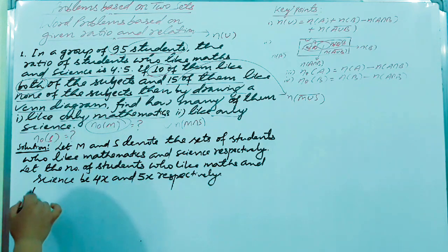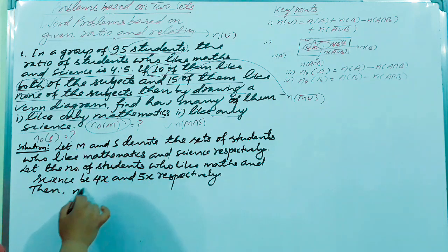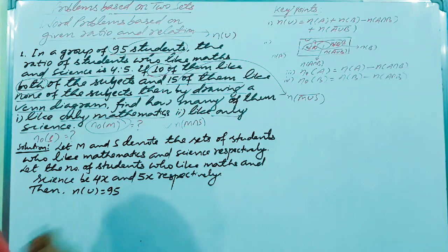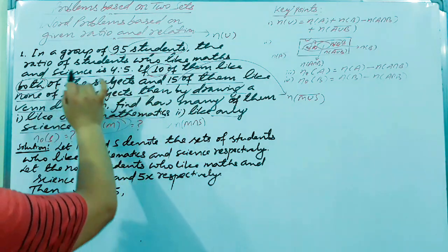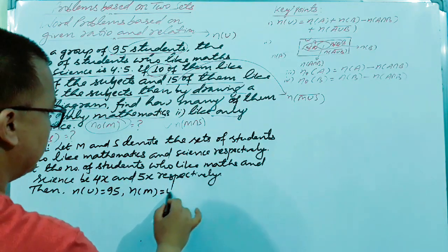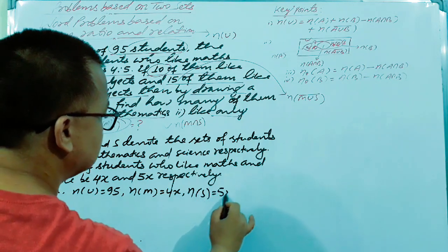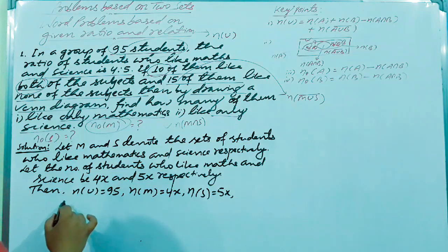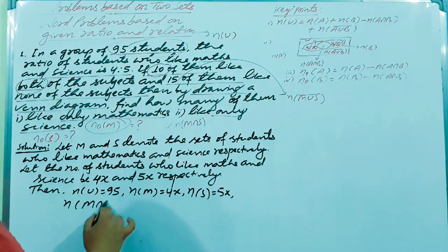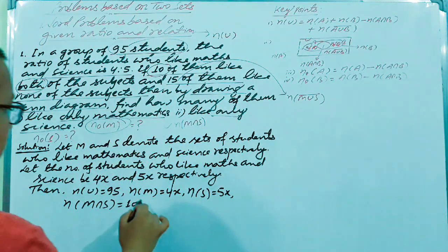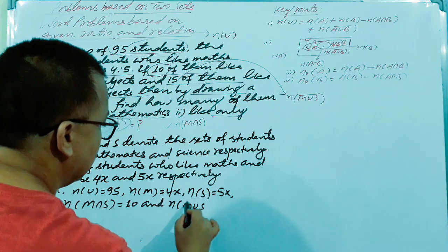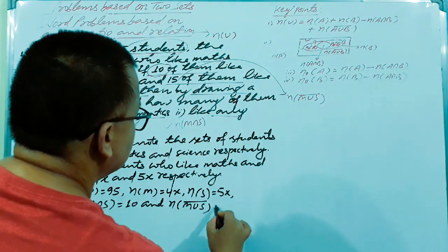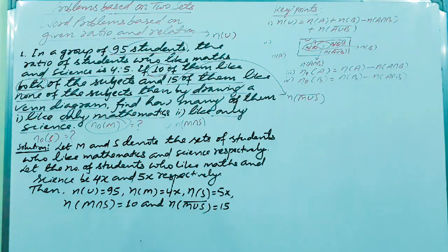Now write down all the given data. n(U) = 95, n(M) = 4x, n(S) = 5x, n(M ∩ S) = 10 — meaning 10 like both subjects — and the complement of M union S equals 15, meaning 15 of them like none of the subjects.